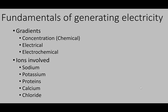This lecture is about electricity — let's talk about how it is generated. We need to refresh our understanding of gradients. There are concentration gradients, also called chemical gradients, where there is more of a substance in one area than another. There are electrical gradients, where there is more positive or more negative in one area than another. And in an electrochemical gradient, both exist at once.